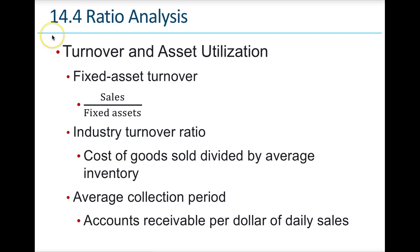The average collection period measures how quickly you collect accounts receivable per dollar of daily sales — whether it takes 30, 60, or 120 days. This helps determine how efficiently a company collects receivables. Accounts receivable are money lent to customers that you're waiting to be paid, typically in business-to-business credit sales. Now looking at fixed asset turnover and ratio analysis, sales to fixed assets gives an idea of how fixed assets are generating sales.